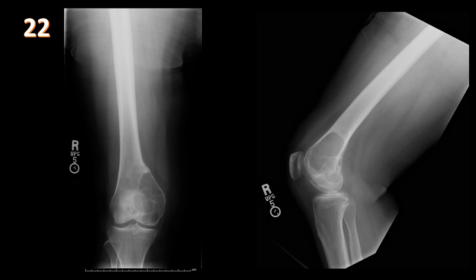AP and lateral views of the knee show a lucent bubbly lesion centered at the epiphysis of the medial femoral condyle with three characteristic findings of giant cell tumor: epiphyseal location, expansile lucent lesion, and well-defined non-sclerotic borders abutting the epiphysis in a patient with a closed growth plate. GCT is benign but can metastasize; treatment is curettage and packing, but recurrence occurs in up to 40% of cases. Differential for epiphyseal lesions includes chondroblastoma (open growth plate, pediatric), infection/tuberculosis, and in adults clear cell chondrosarcoma.